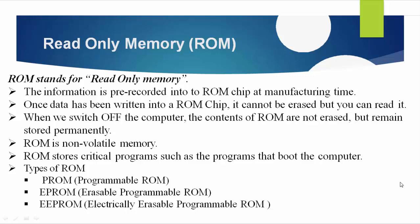Primary memory has two types: one is RAM and the other is ROM. ROM stands for Read-Only Memory. The information is pre-recorded into the ROM chip at manufacturing time. Once the data has been written into a ROM chip, it cannot be changed, but you can read it — so it is called Read-Only Memory.